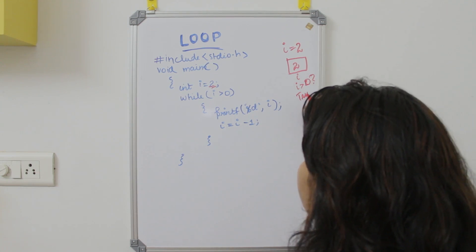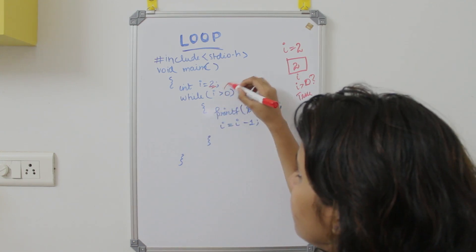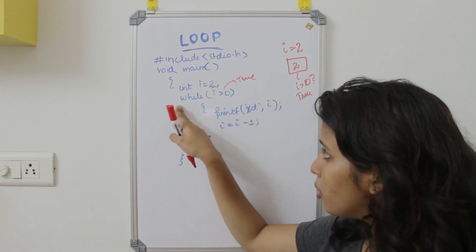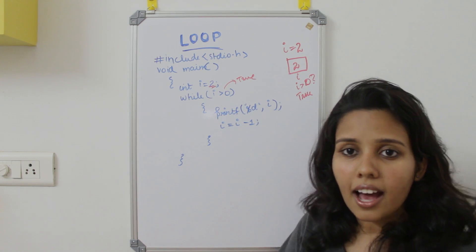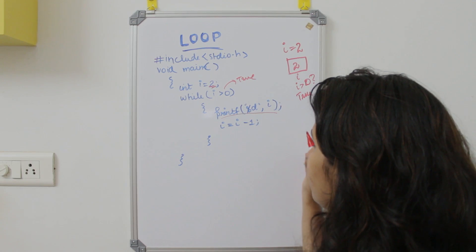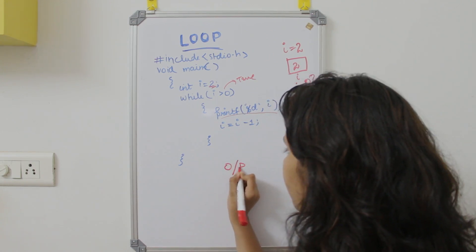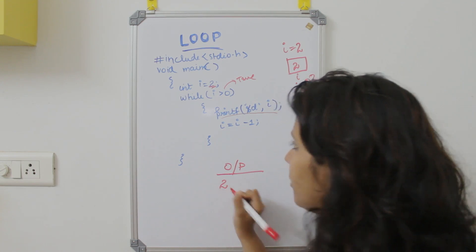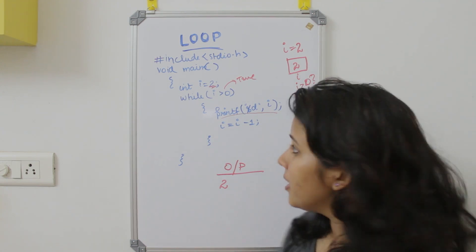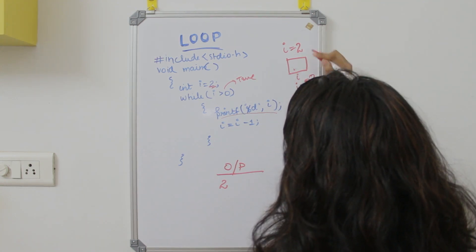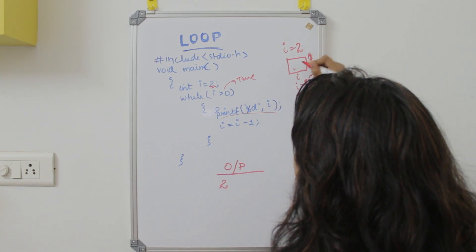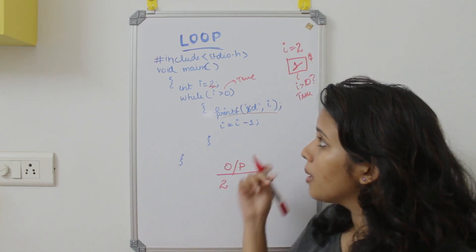Since the condition is true, it is executed. We will print i. The output value of i is 2. Then i equals i minus 1, so i becomes 2 minus 1, which is 1. Now i value is 1.